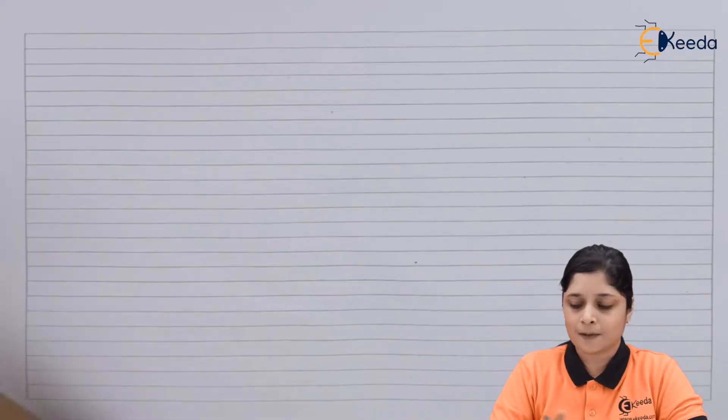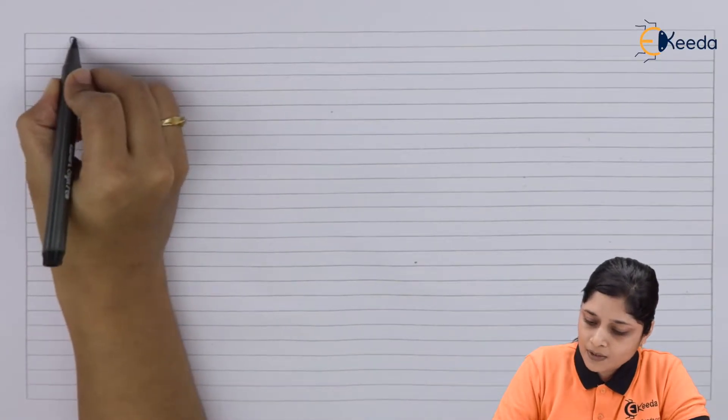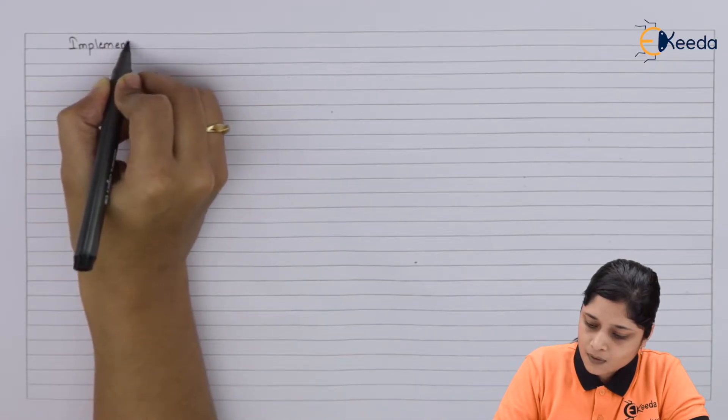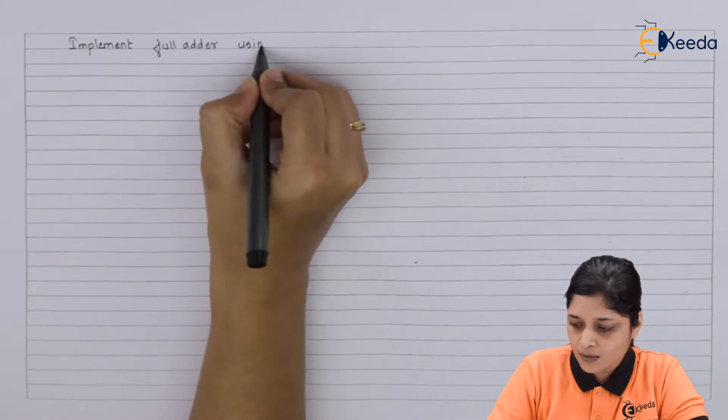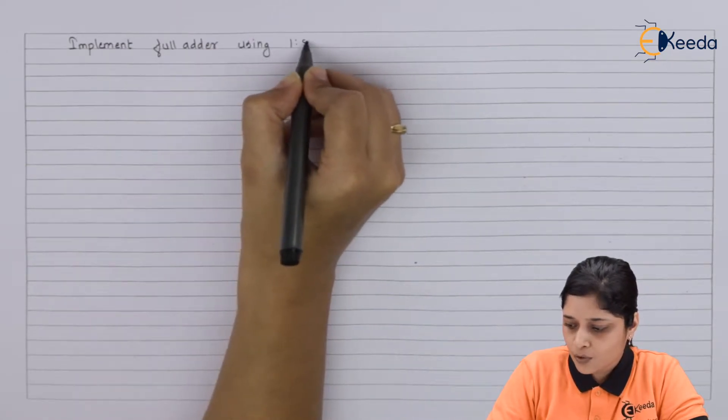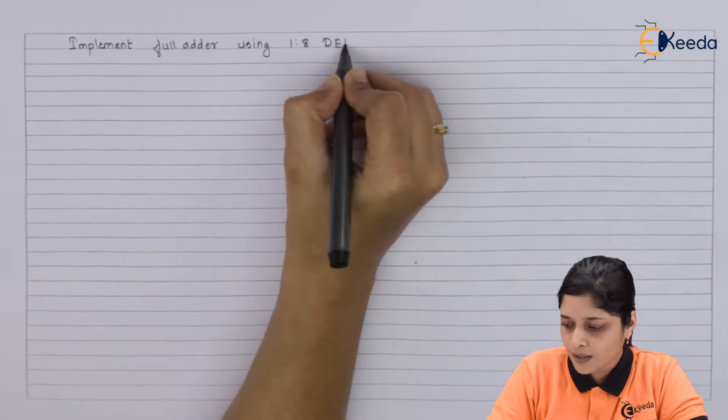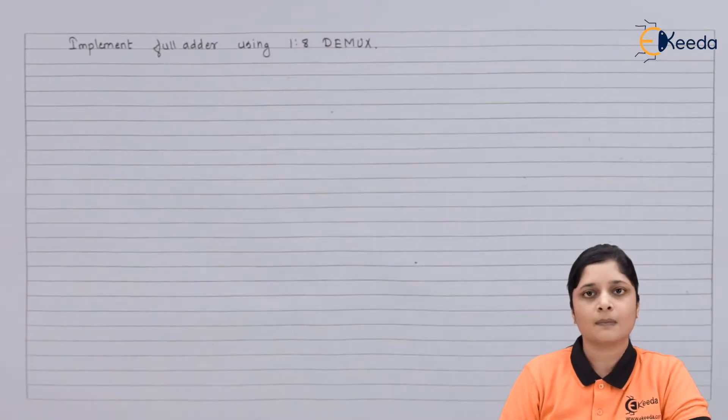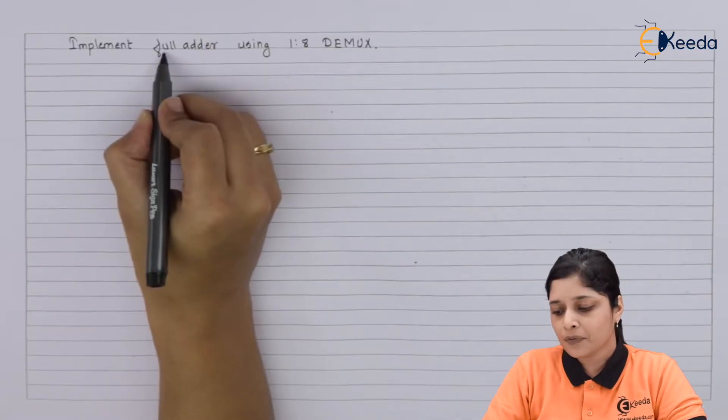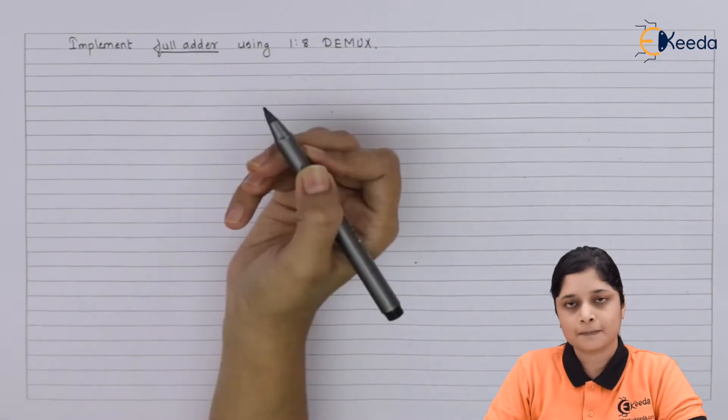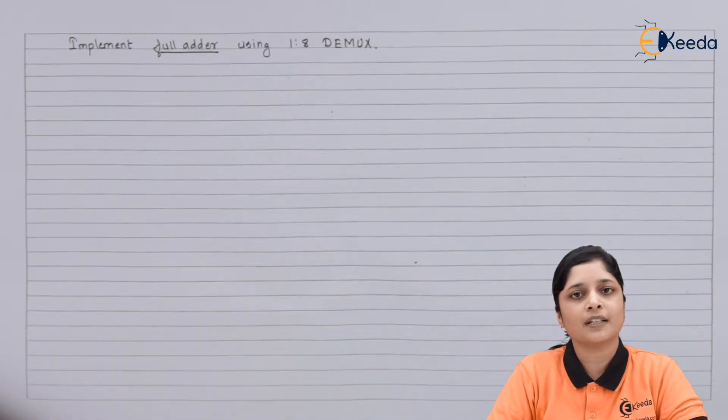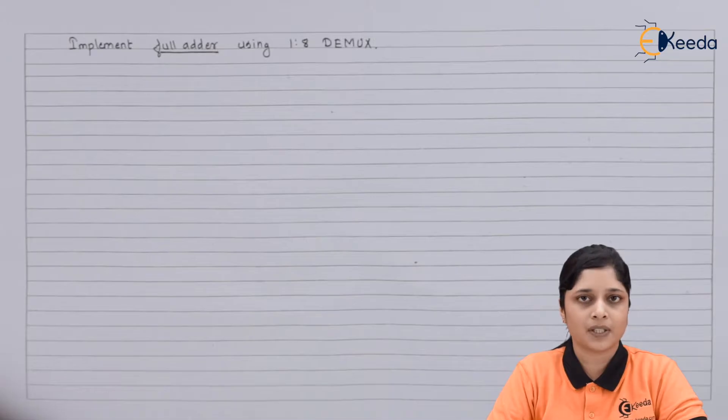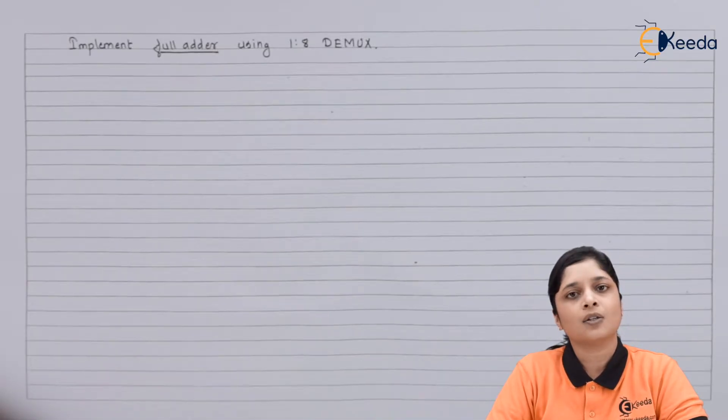Your question is implement full adder using 1 is to 8 DEMUX. So here you have to focus on what full adder is. You should know the basic definition of full adder. Full adder is used to add three single binary bits. It has two outputs and three inputs.